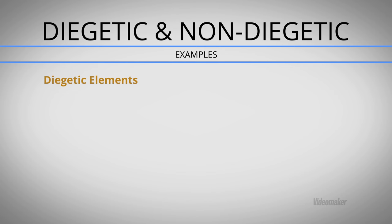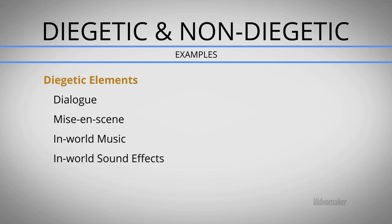Diegetic is a term that you usually hear used in reference to sound elements, but it can also be used to describe visual elements such as graphics. Diegetic means anything within the story — this diegesis, that's the world of the story. So that's anything within the narrative world that the character can interact with, that the character recognizes and understands as part of their world.